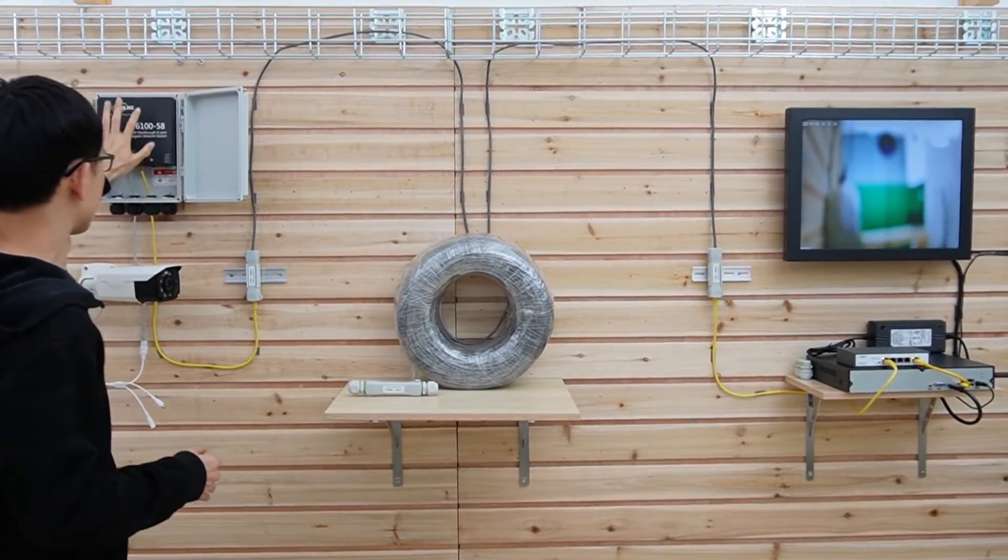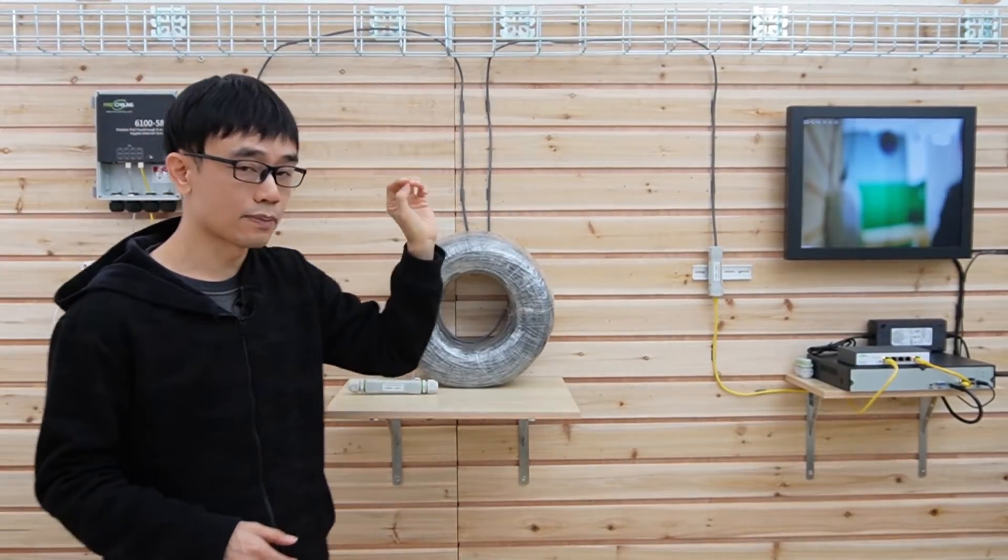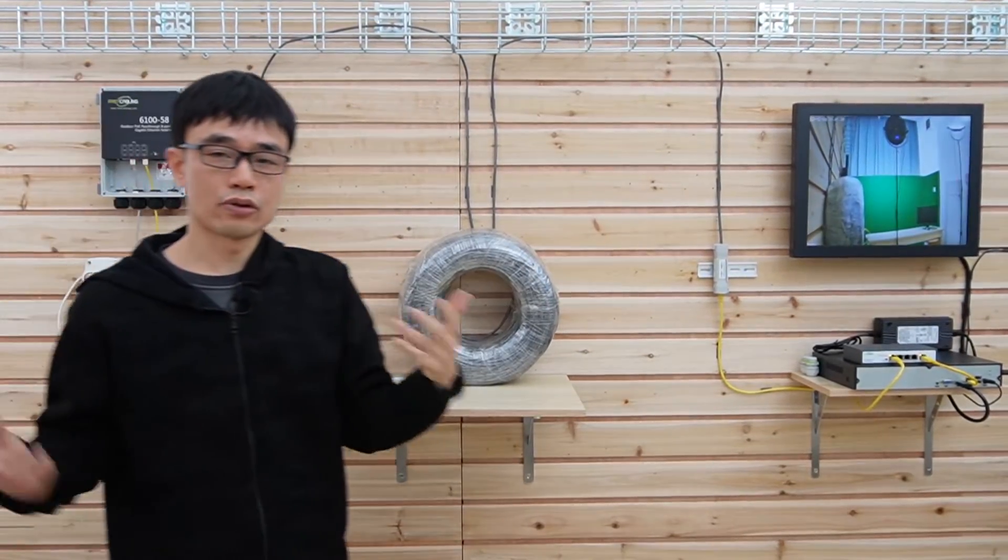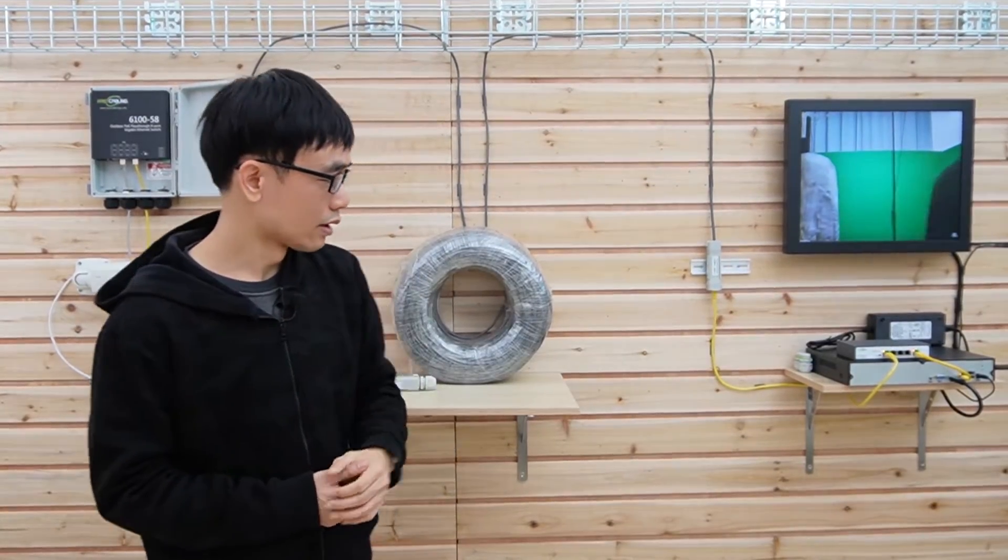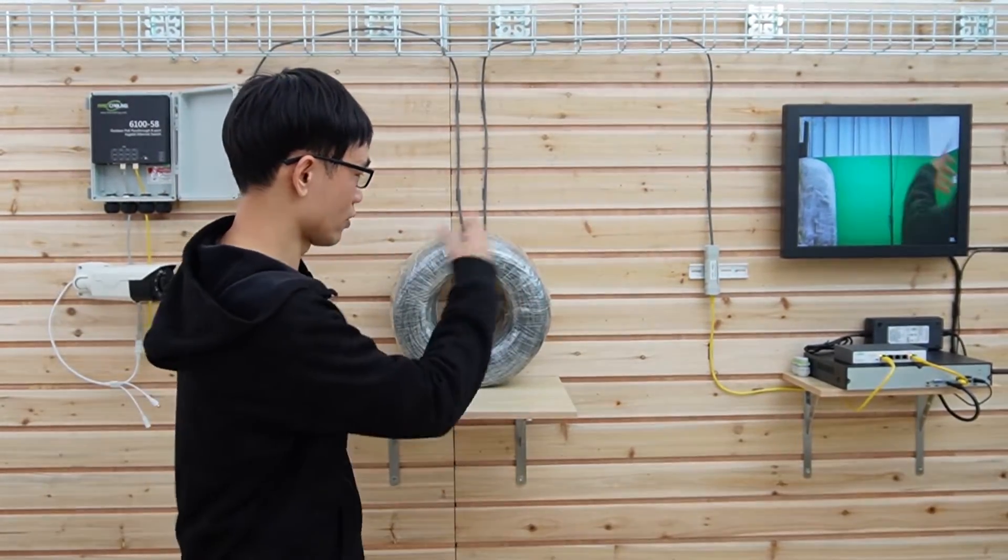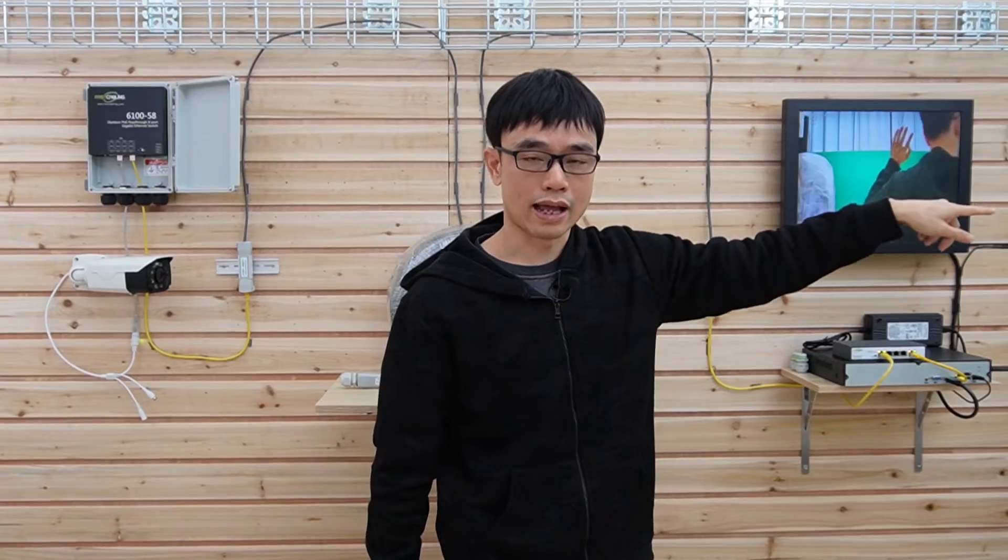In summary, we also need to have the outdoor PoE switch, which can be powered by another PoE switch or PoE injector to collect all the video from the four cameras and send back to the network video recorder. So this is just one side, we just need to copy all the settings and connect to port number two and link to all the cameras for another side.